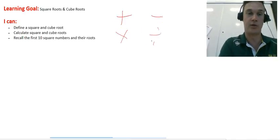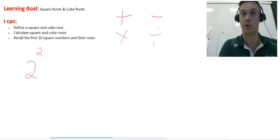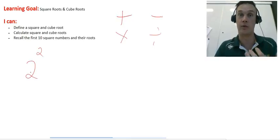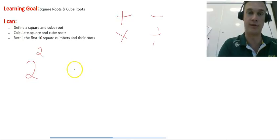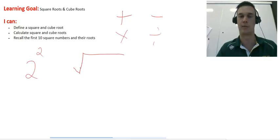So the opposite to squaring a number—we know that 2 squared equals 2 times 2 which equals 4—the opposite to squaring a number is square rooting a number. And this symbol for square rooting looks like this. It's similar to a long division symbol, but it has that little tick at the top there. So this symbol here means square rooting.